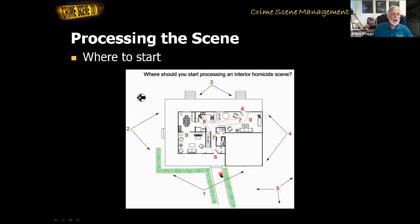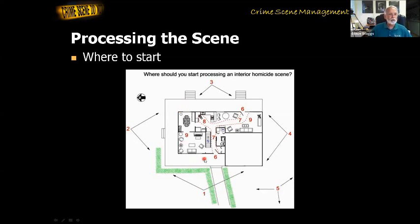Then if you have a point of entry, you might go ahead and photograph it. Let's say it was the window in the back of the dining room. You could photograph that window and then start your processing inside from that window, if you're pretty sure about the point of entry. Otherwise, you're probably just going to choose one of the entry ways — here's a front door, here's a back door — to begin your photographing and processing of the scene.